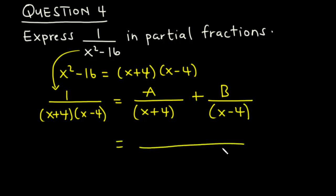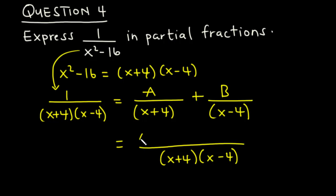Now let's find the LCM between (x + 4) and (x - 4). The LCM is (x + 4)(x - 4). Dividing by (x + 4) gives (x - 4), so we have A times (x - 4). Dividing by (x - 4) gives (x + 4), so we have B times (x + 4).